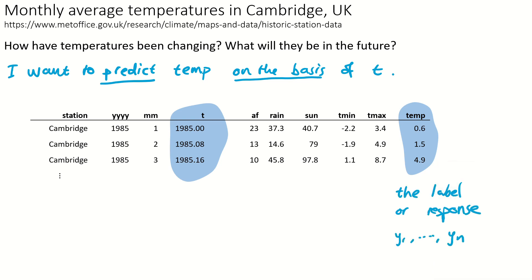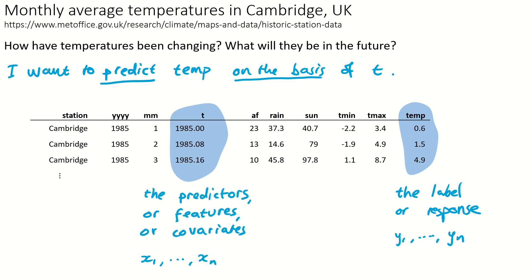The thing we're trying to predict is called the label or the response variable, and I'll call the list of them y1 up to yn, where n is the total number of rows in the data set. The thing we're using to make predictions is called the predictor variables, or the features or covariates. In this question the only variable I'm using for prediction is T, but I could perfectly well have used several predictors.